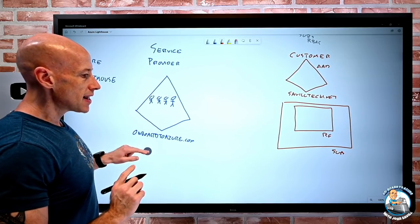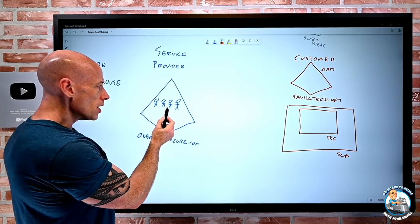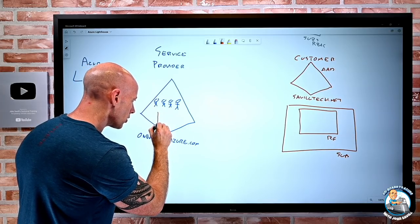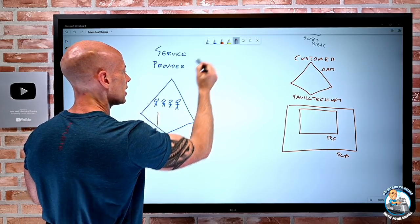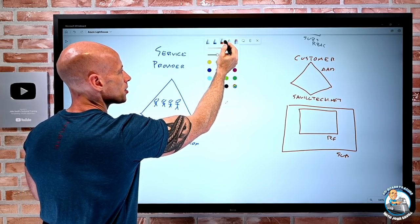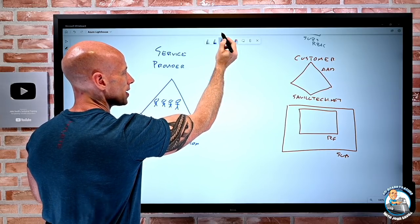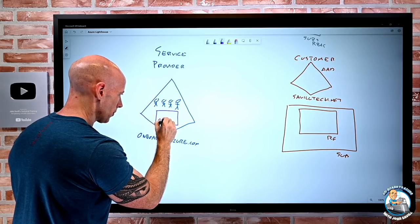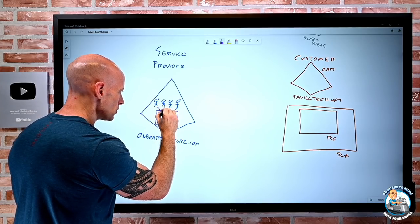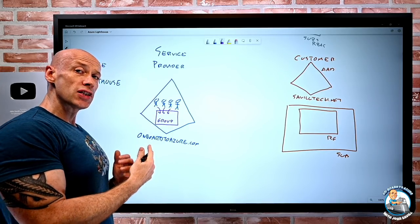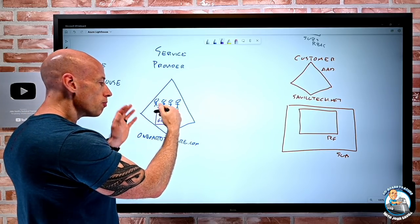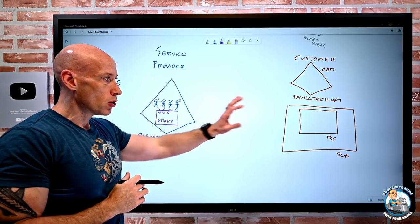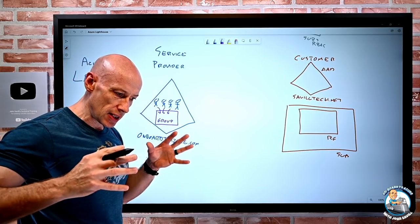The first step is — rather than dealing with individual users — I'm actually going to create a group, and I'm going to put the users into that group. Over time, new users may join and I can add and remove people from the group. But it's the group that I'm going to give a certain permission to on the customer side. That's really the big deal.